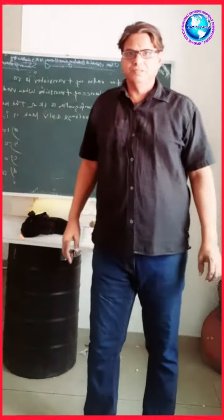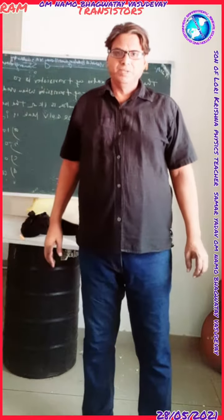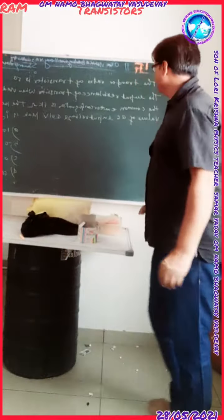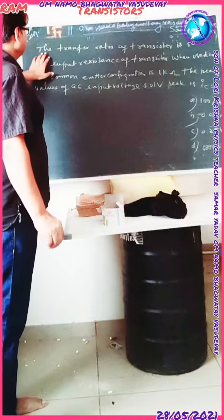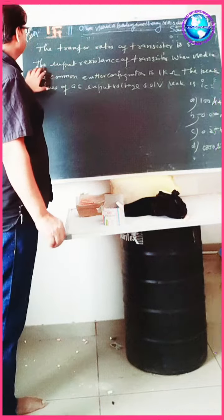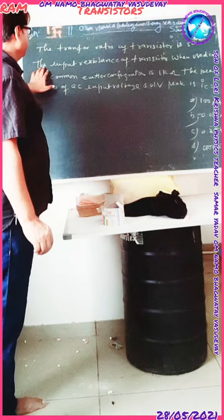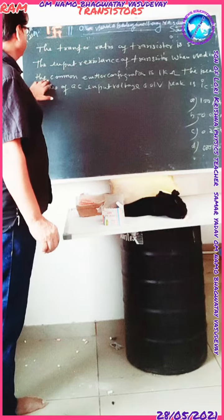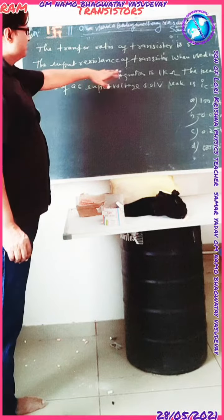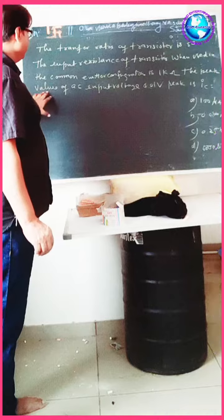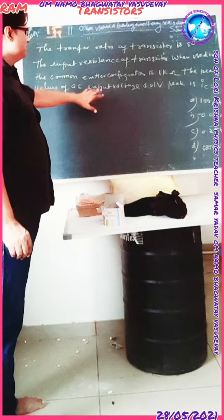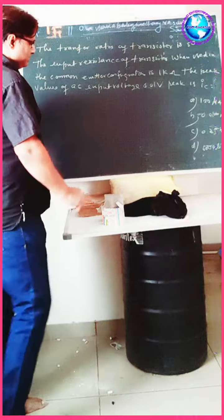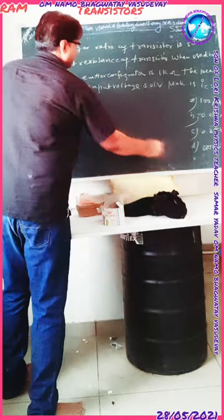Today in our physics semiconductor lesson, we receive one MCQ. As you can see here, the current gain (beta) of the transistor is 50. The input resistance of the transistor used in common emitter configuration is 1 kΩ. The peak value of the AC input voltage is 0.1 V. Then the peak collector current IC is equal to how much?